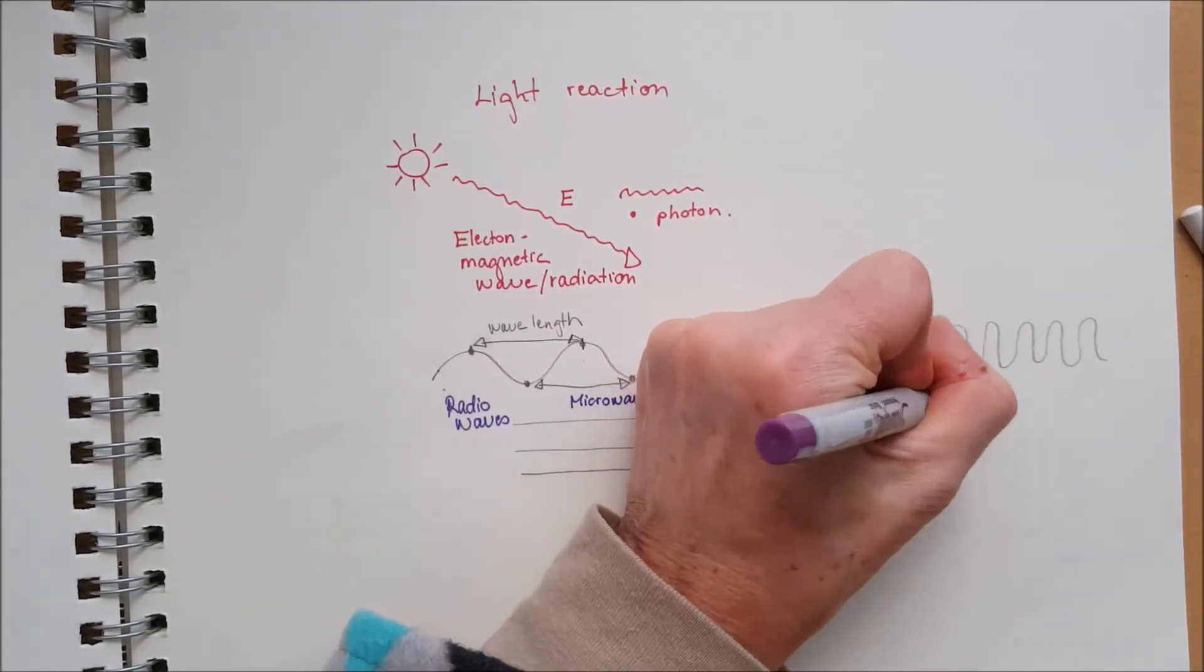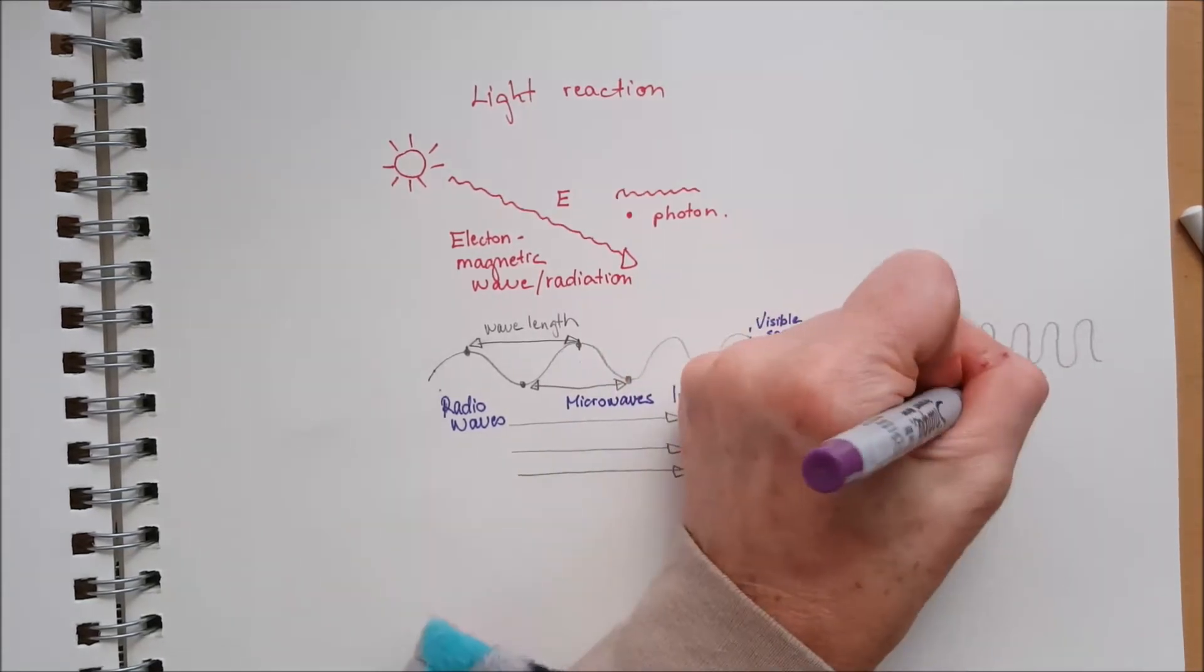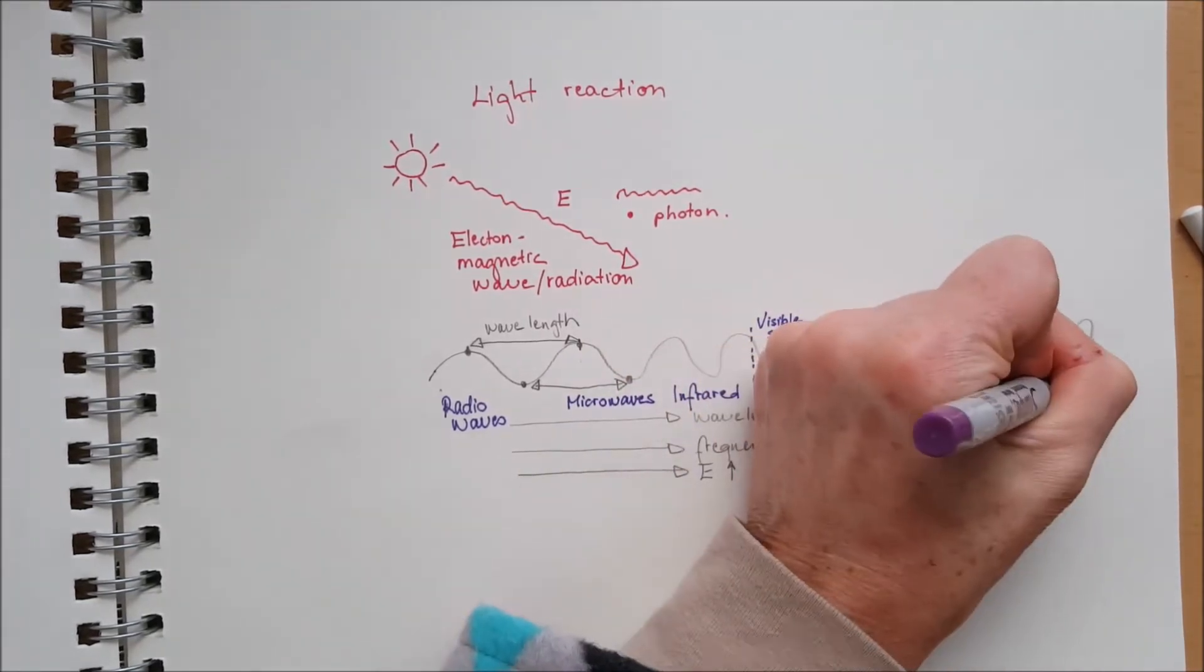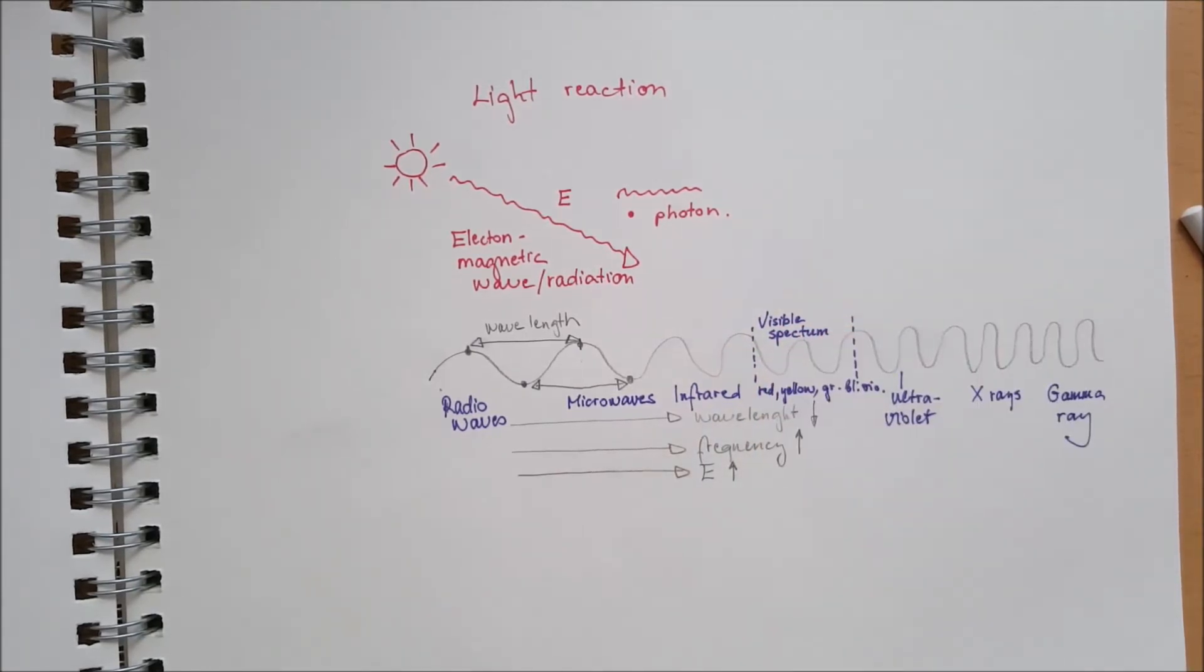After that comes the UV, the ultraviolet light. After that the X-ray and the highest energy wave is the gamma ray. So they contain a really high energy.